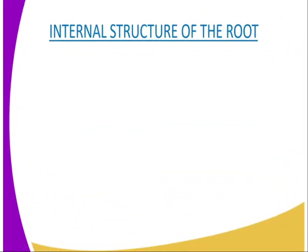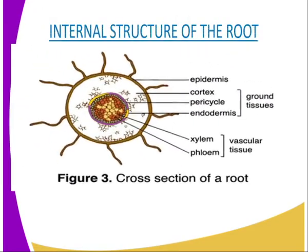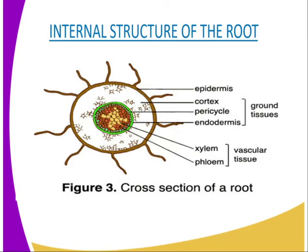Now we are going to deal with the internal structure of the root. As we are aware, the root is the start of the transport, and it is responsible for the absorption of water and mineral salts. In our diagram, you can see the cross-section of the root whereby we have got several structures. We have the epidermis, the cortex, the pericycle, and the endodermis — the three of them form the ground tissue. We also have the vascular tissue, which is a combination of the xylem and the phloem. The function of the xylem is to transport water, while the phloem transports food.